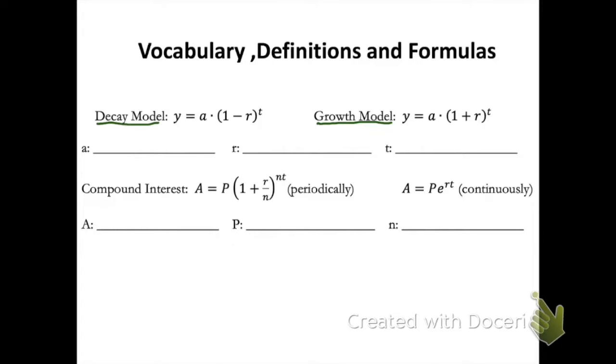So the variables a, r, and t stand for initial amount, so however many people you start with, initial value. R stands for rate. Make sure that we always convert this to a decimal. So for example, if we had a 5% rate, then that would be 0.05. And t stands for time.